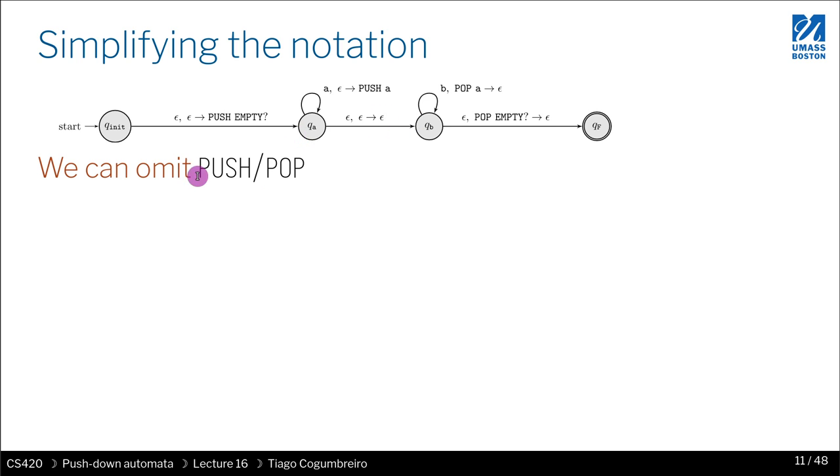Next, we can omit pop and push. Why? Because pop always appears on the left-hand side, and push always appears on the right-hand side. So if we omit these labels, because of the order, we know: the first position means read, the second means pop, and the third means push.